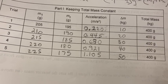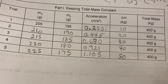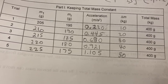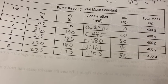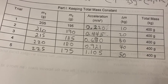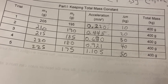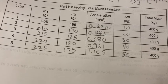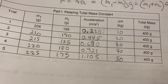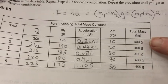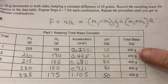For 30 grams, the acceleration is 0.680. For 40 grams difference, the acceleration is 0.921. And for 50 grams difference, it's 1.015.